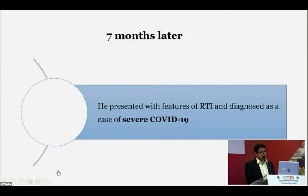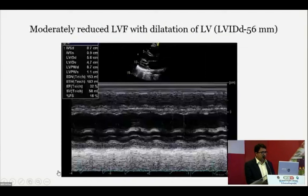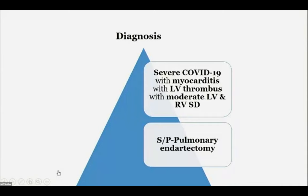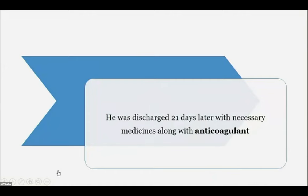He was diagnosed with COVID-19. Echo showed a large thrombus in the LV, moderate LV systolic dysfunction, and LV dilatation. He was diagnosed as COVID-19 with LV myocarditis, LV thrombus, and moderate LV systolic dysfunction. He was managed extensively in the ICU and discharged 20 days later.